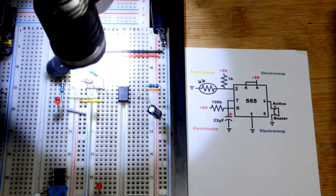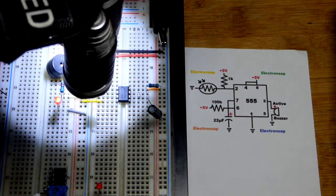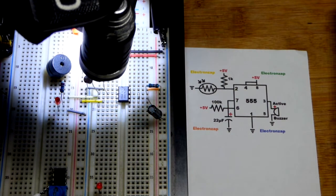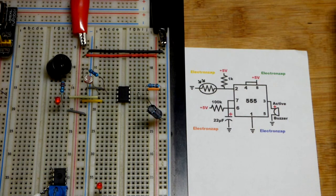You can probably tell that if we hold the light on there the LED is staying on until we take the light off. It will stay in alarm, we can say, as long as bright light falls on the light dependent resistor.